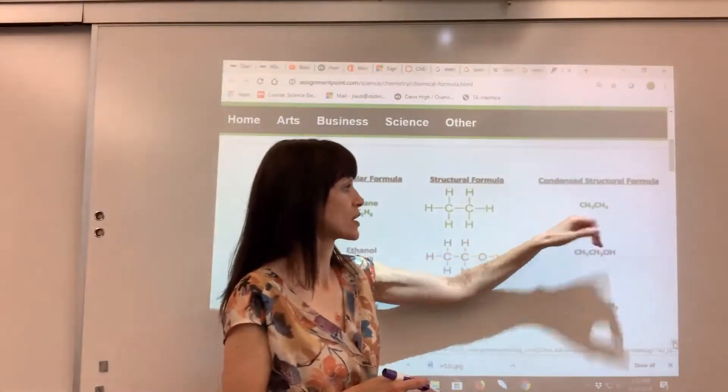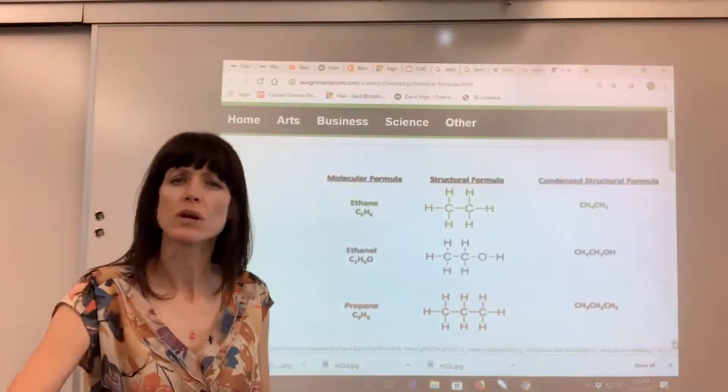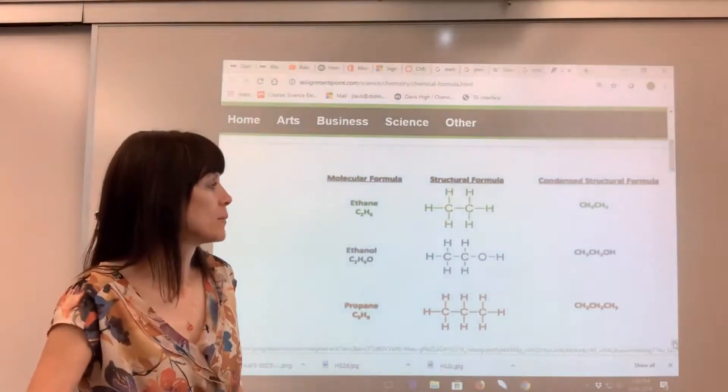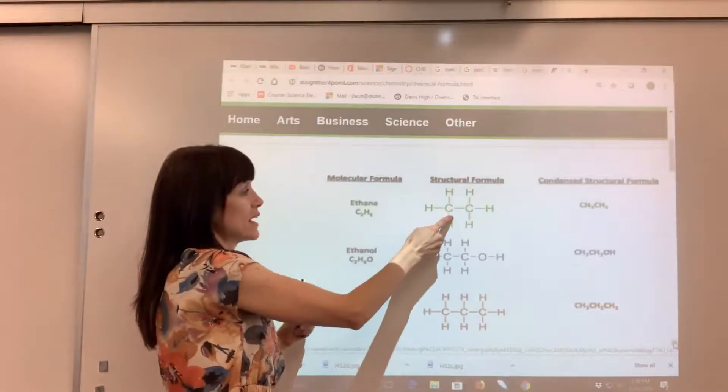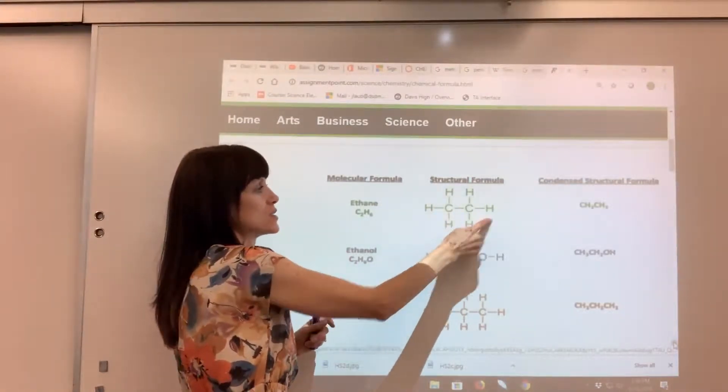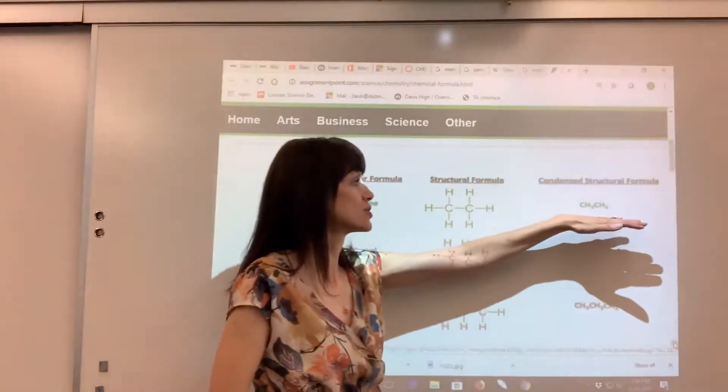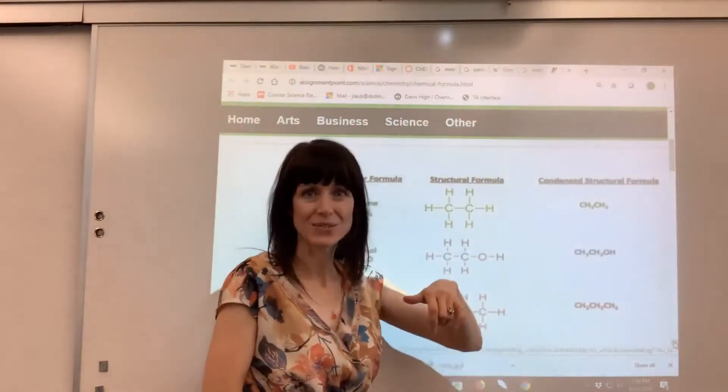And then the condensed structural formula, we use this more in organic chemistry. We break out repeating units. So check this out. On this ethane you have a CH3 connected to a CH3. So on the condensed structural formula, they did CH3CH3.